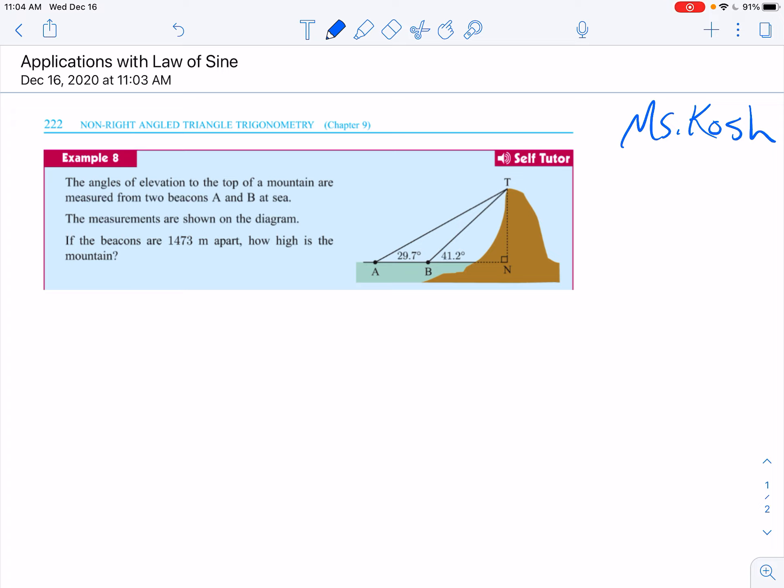Okay, so they tell us the elevation at the top of a mountain are measured from two beacons, A and B, at C. The measurements are shown in the diagram. If the beacons are 1,473 meters apart, how high is the mountain?